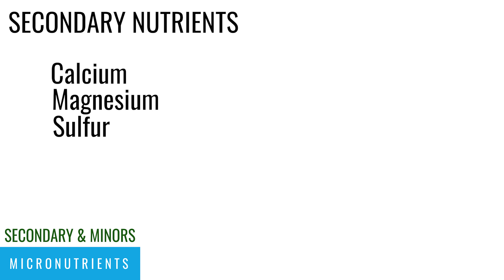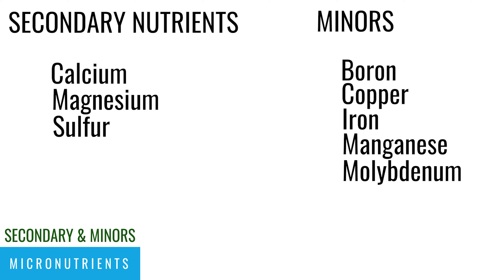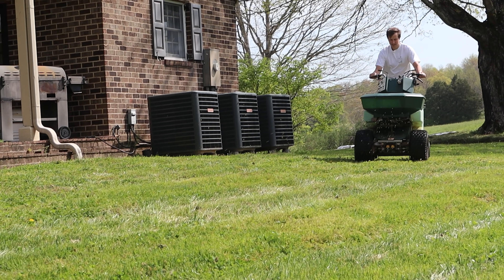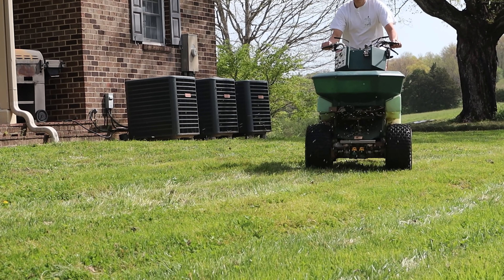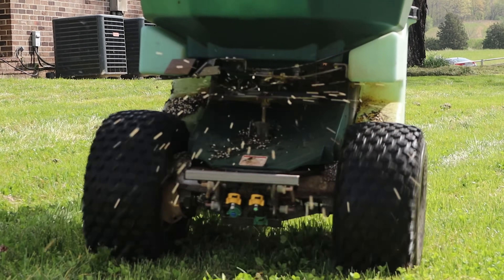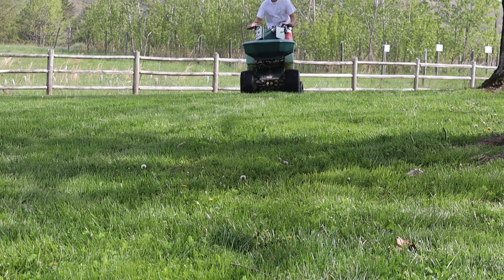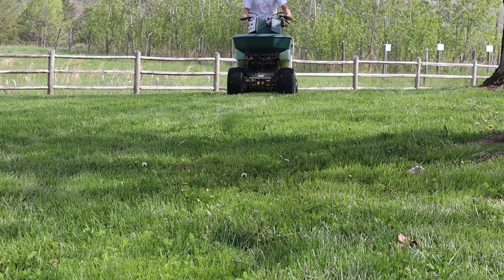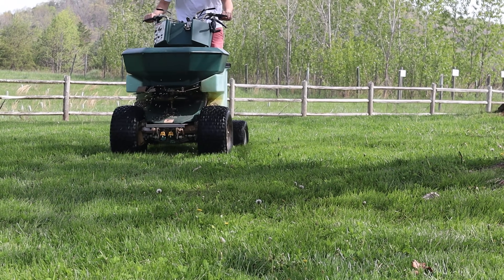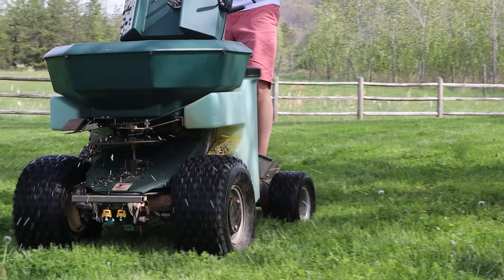And then we have our minor nutrients, like those we mentioned earlier: boron, copper, iron, manganese, molybdenum, zinc, chlorine, and iron. Micronutrients play many roles in turf grass, and there are many resources out there that explain what they do. But specifically, I wanted to dive into the world of understanding what form to apply and at which point they cause more harm than good.